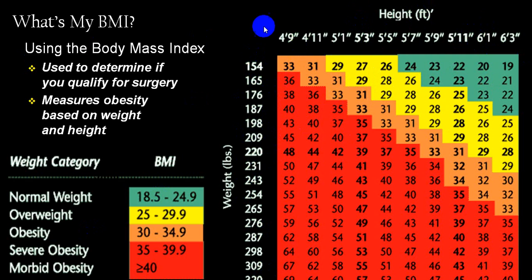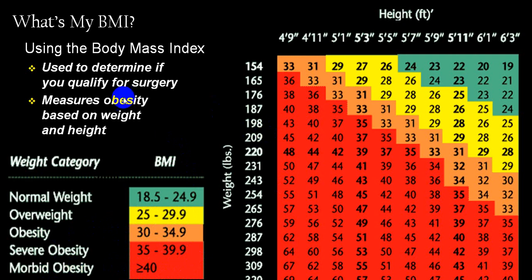BMI between 18 to 25 is normal; overweight is 25 to 30; more than 30 is obesity; more than 35 is severe obesity; and more than 40 is morbid obesity, where comorbid complications from obesity begin to appear.